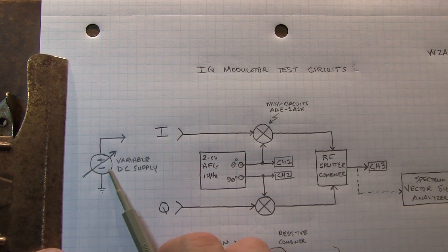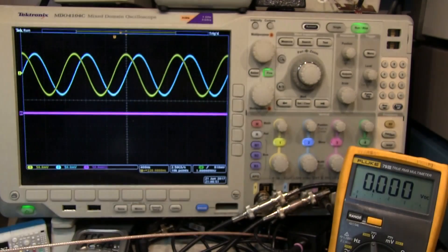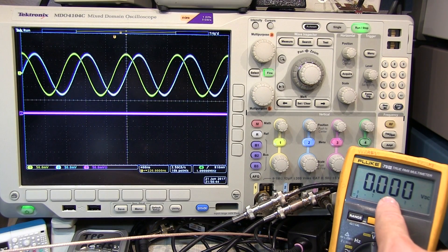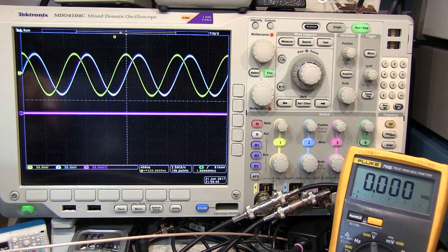Now to demonstrate the basic principle of these mixers in the modulator, I've just hooked up a simple variable DC power supply to the I input. Let's take a look at the effect of that as we turn this voltage up. With zero volts applied to the I and the Q inputs, we essentially get nothing out because the mixers are multiplying by zero.